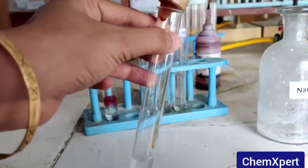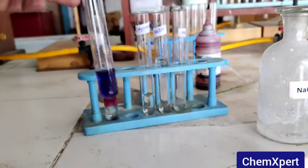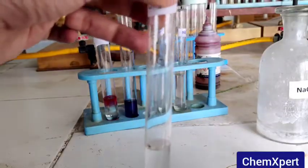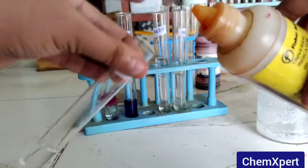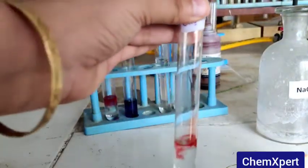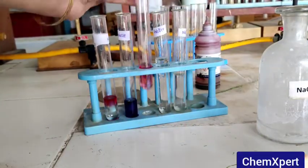In the next test tube we have taken CH3COOH, that is a weak acid. Now what will be the color change we will observe? It is just a slightly red color, not the dark one, so it is different from that of the HCl.